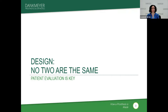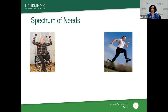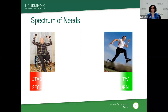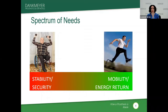No two prostheses are the same. Patient evaluation is really the key here. Looking at our spectrum of needs, we have lots of different people who have had amputations for various reasons. Some people are going to need more stability; some are going to need more mobility or energy return. We design that specific prosthesis for the individual. There are hundreds of feet and knees on the market, and various ways to custom-make the socket.